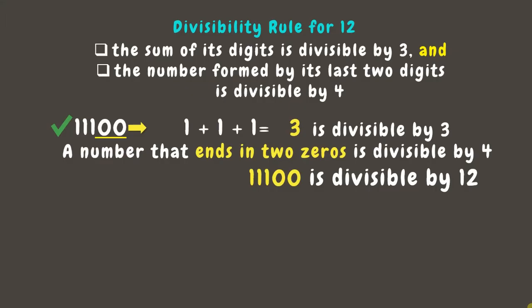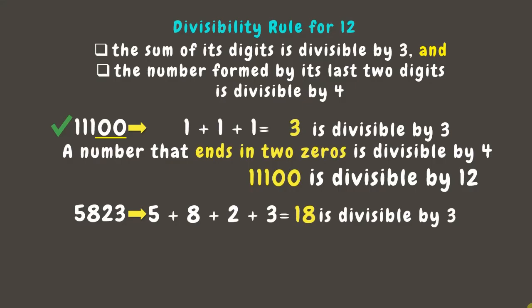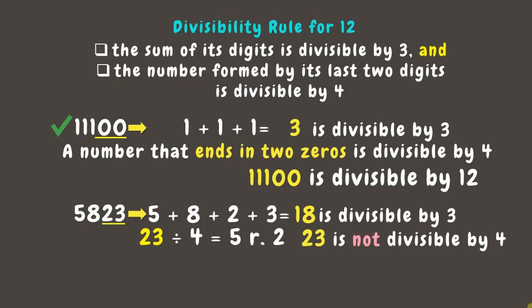Last example, we have the number 5823. Let's check first if it is divisible by 3. Let's add its digits — that's 5 plus 8 plus 2 plus 3, which is 18, which is divisible by 3. Next, let's check if it is divisible by 4. The last two digits is 23, which when divided by 4 results to 5 with a remainder of 2. Since there is a remainder, it means that it's not divisible by 4. Since 5823 is only divisible by 3 but not by 4, it means it is not divisible by 12.